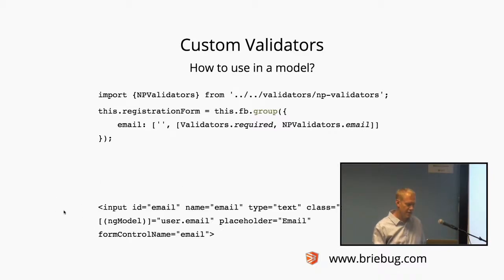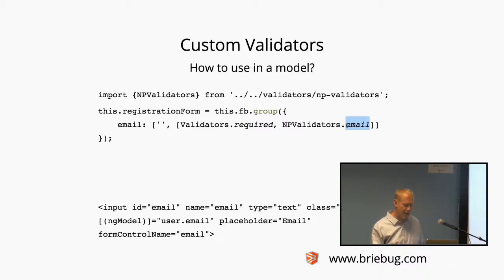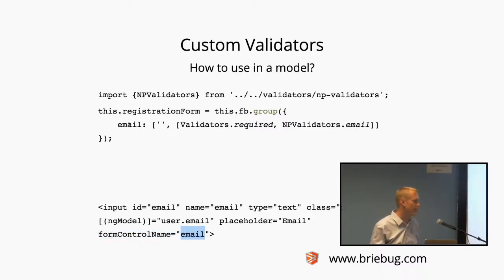So how do I use it in a model? I pull in the validators, then apply them to my form group. For the email field, the default value is empty, and I apply two validators: Validators.required and our BBValidators.email. This applies our custom email validator. The only thing I need to do is make sure my form control name in the template matches the key in the group. Those two match — they're now wired up.